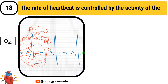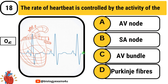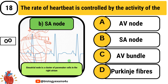Question number 18: The rate of heartbeat is controlled by the activity of — Option A: AV node. Option B: SA node. Option C: AV bundle. Option D: Purkinje fibers. The answer is SA node. The sinoatrial node is a cluster of pacemaker cells in the right atrium that controls the rate of heartbeat.